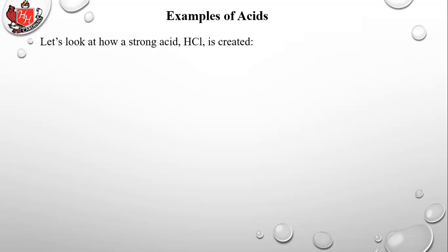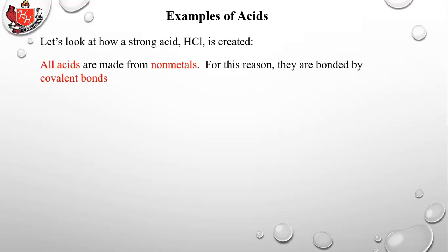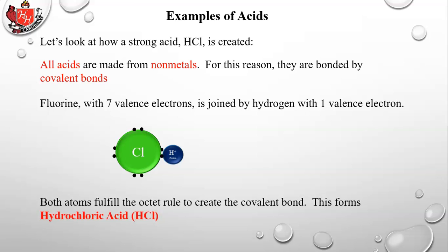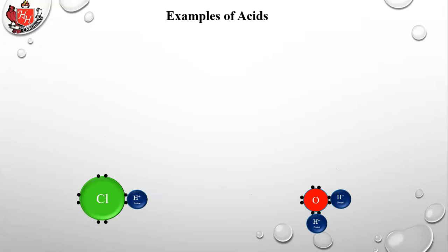Let's look at how a strong acid, HCl hydrochloric acid, is created. All acids are made from non-metals, so they're bonded by covalent bonds. Fluorine with seven valence electrons is joined by hydrogen with one valence electron, forming a covalent bond where both atoms fulfill the octet rule.